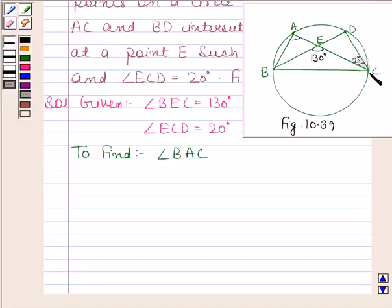Now angle CED plus angle BEC is equal to 180 degrees since they are forming a linear pair.